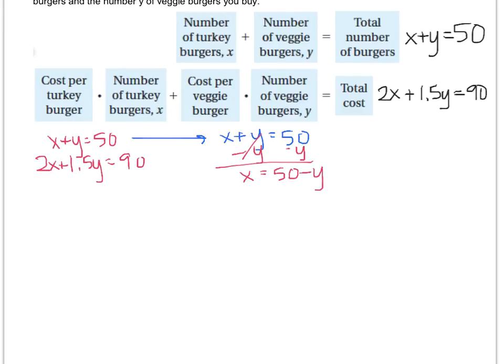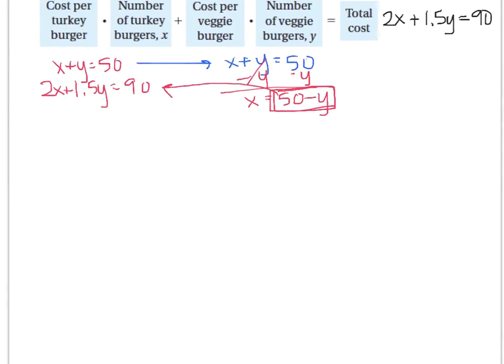It doesn't matter what order you write it in because you're just going to plug it in anyway. So now what I want to do is take this which is equal to x and plug it into this equation wherever I see an x. So let's do that. Rewrite the equation, but wherever you see x, put 50 minus y. And now I have to distribute.